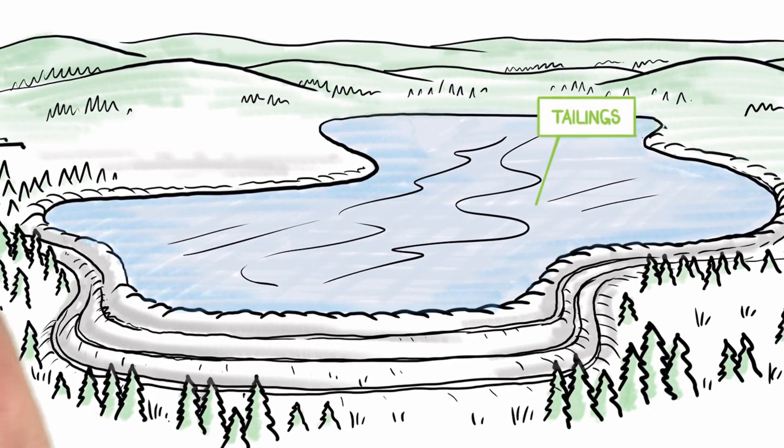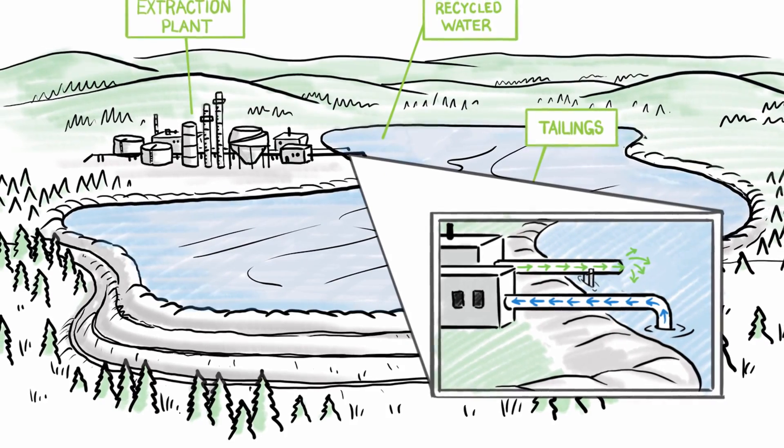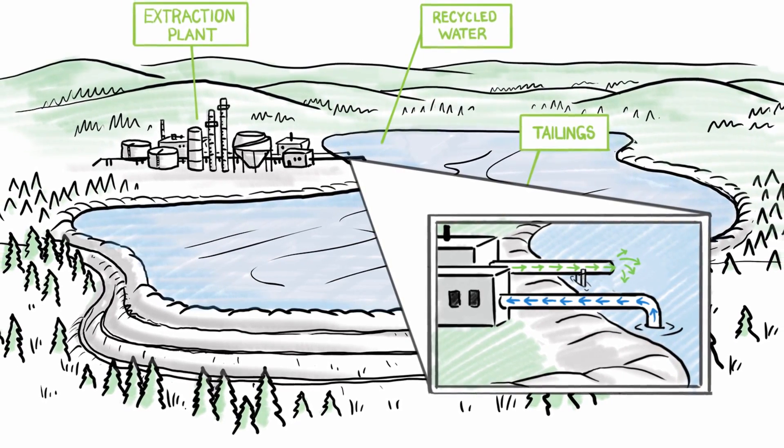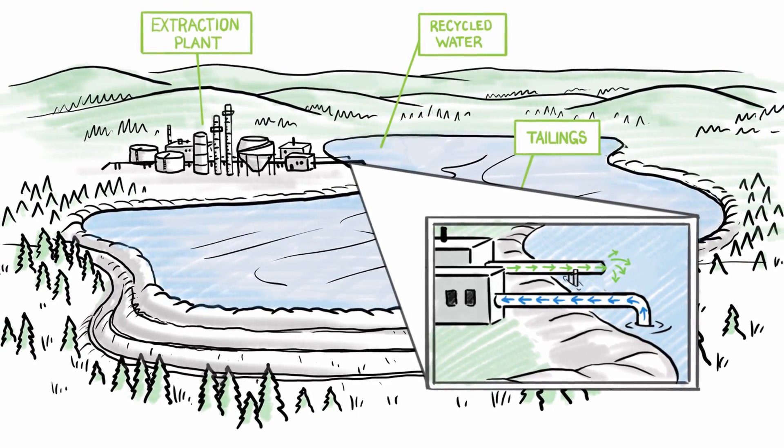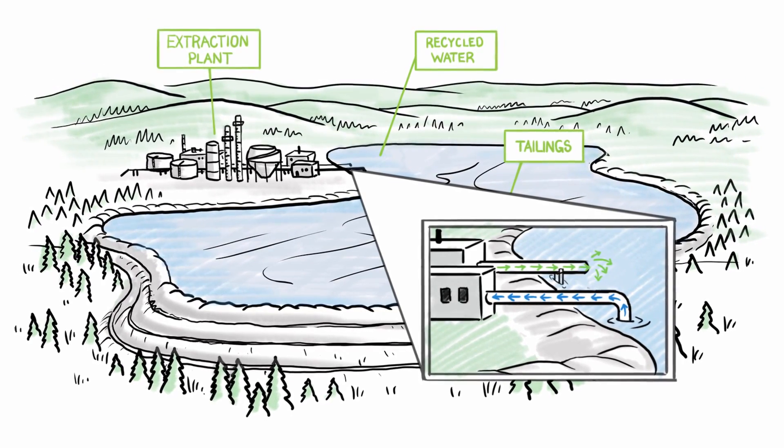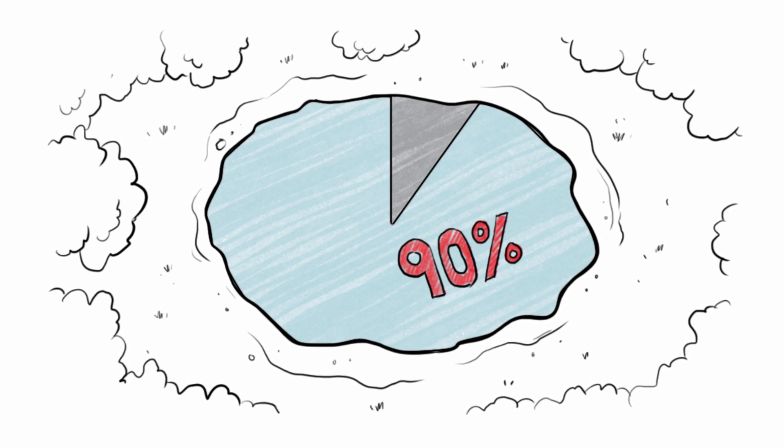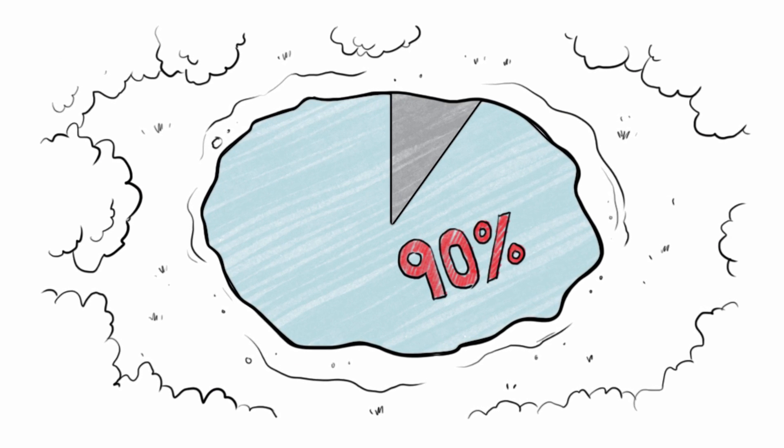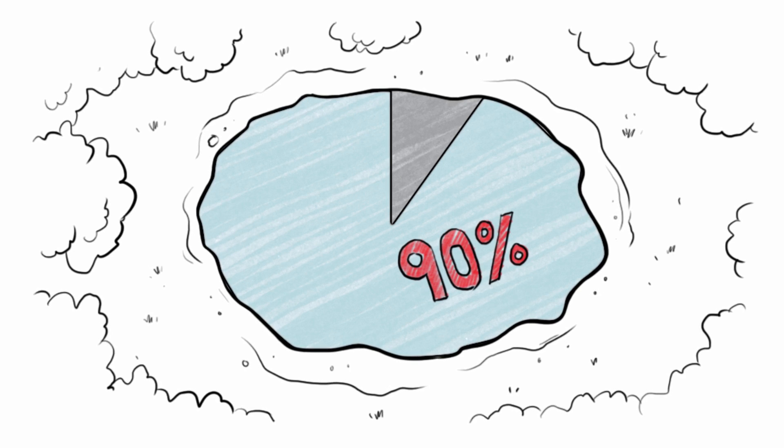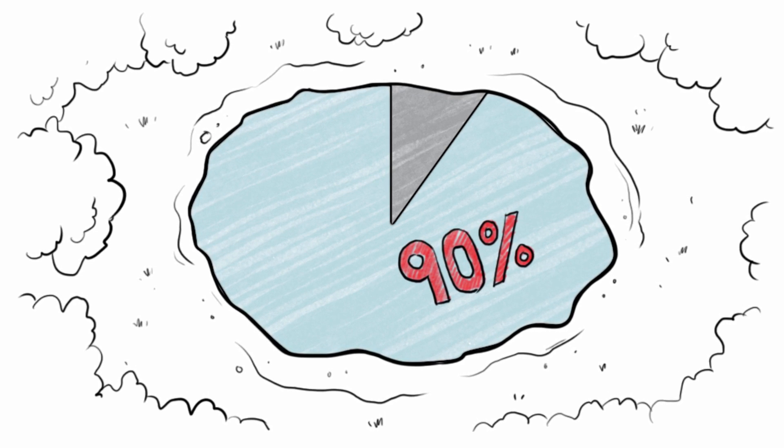Oil sands tailings are kept in man-made basins called ponds that are designed to hold the tailings produced from the mine. Water from tailings ponds is sent back to the extraction plant and used again. In fact, up to 90% of the water an operator uses is recycled from a tailings pond, which really helps to reduce the amount of water used from other sources.